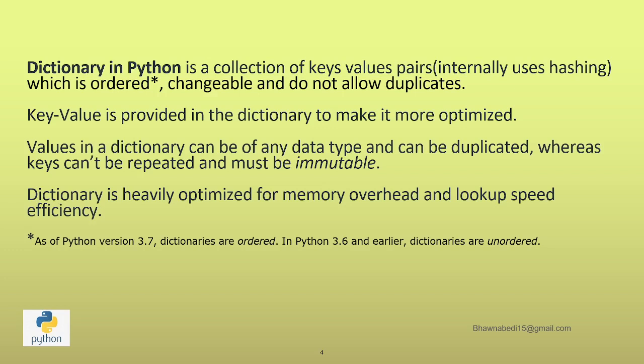Internally, a dictionary uses a hashing algorithm to store your data in a very ordered format. If you have defined a particular value at key one, a particular value at key two, a particular value at key three, it will remain ordered — just like we saw in the list. Now, this ordered behavior is something you should understand: before Python version 3.7, dictionaries were not ordered. After version 3.7 came into picture, dictionaries became ordered. They are also changeable.